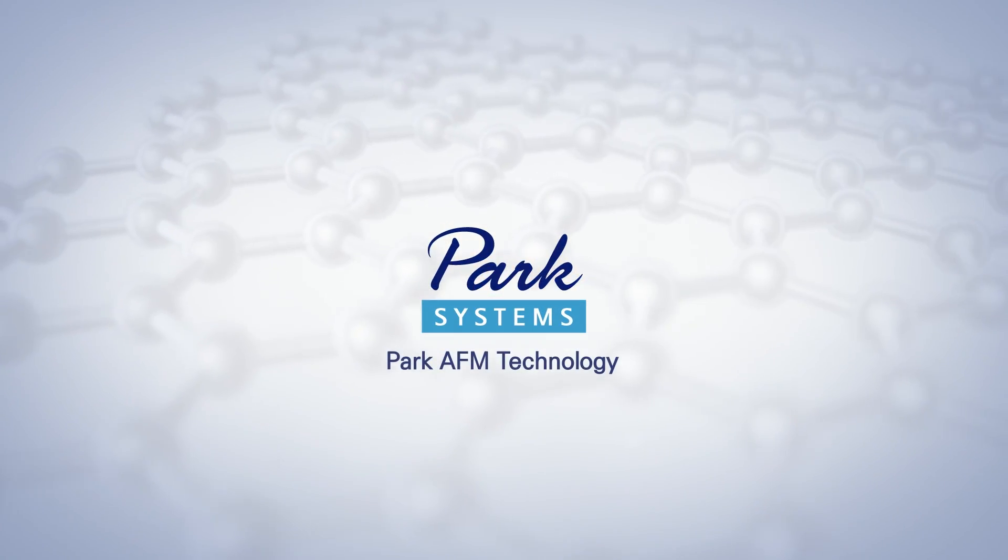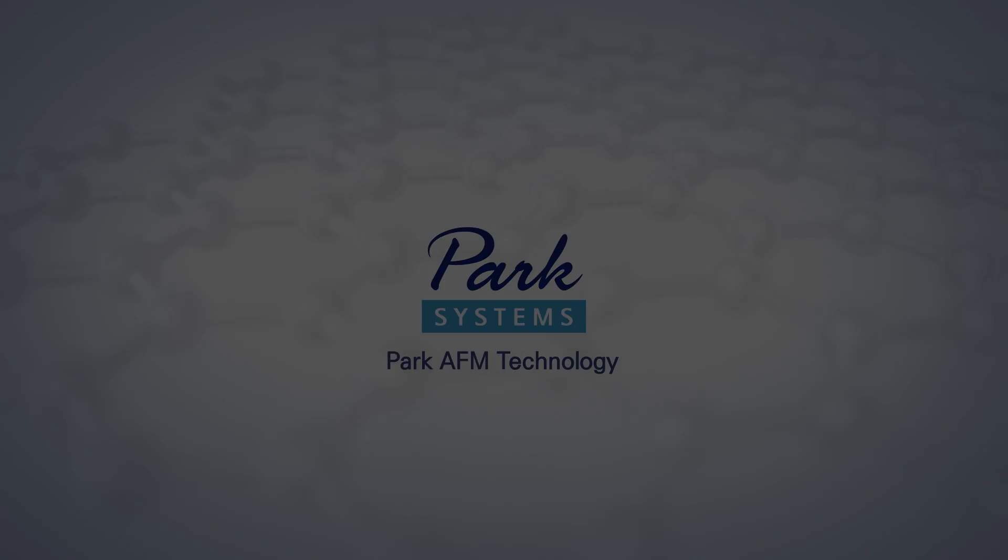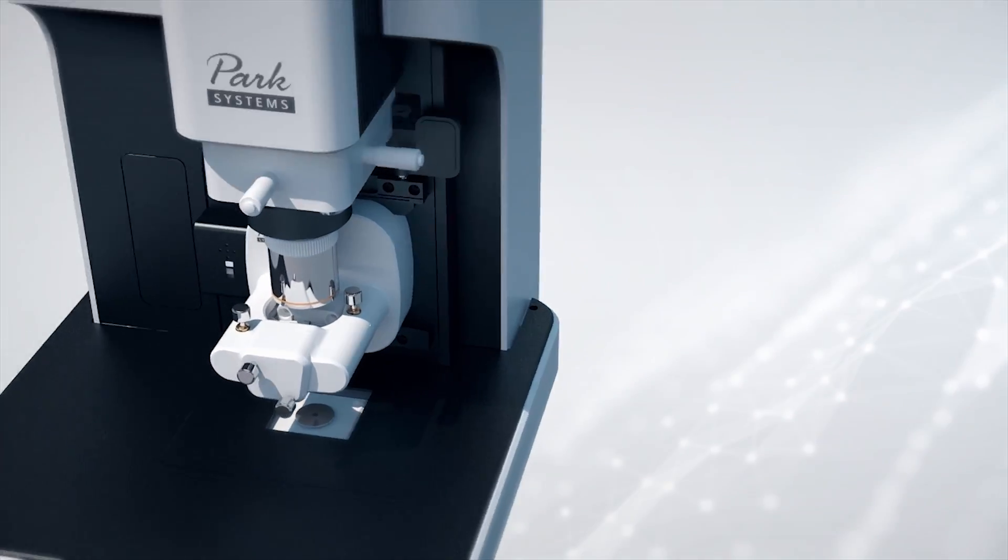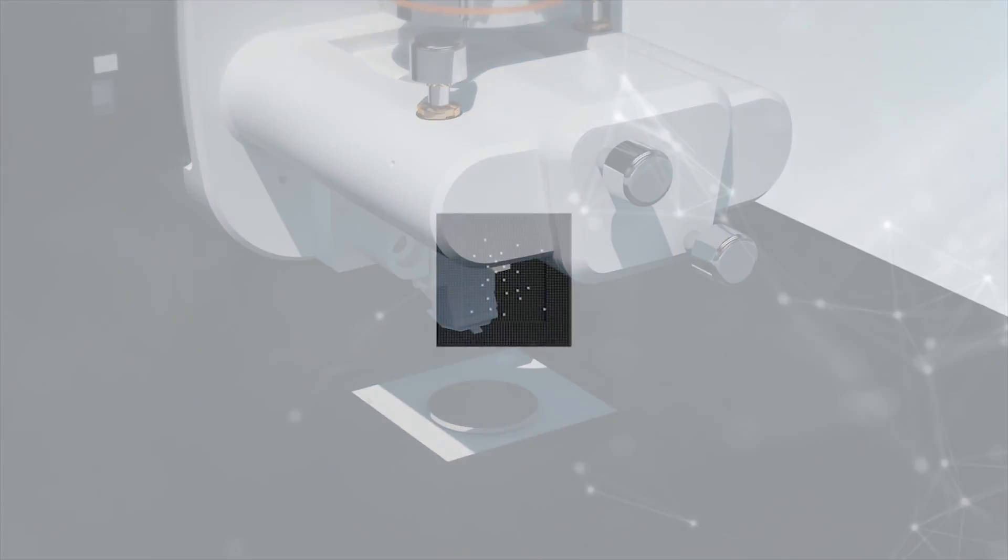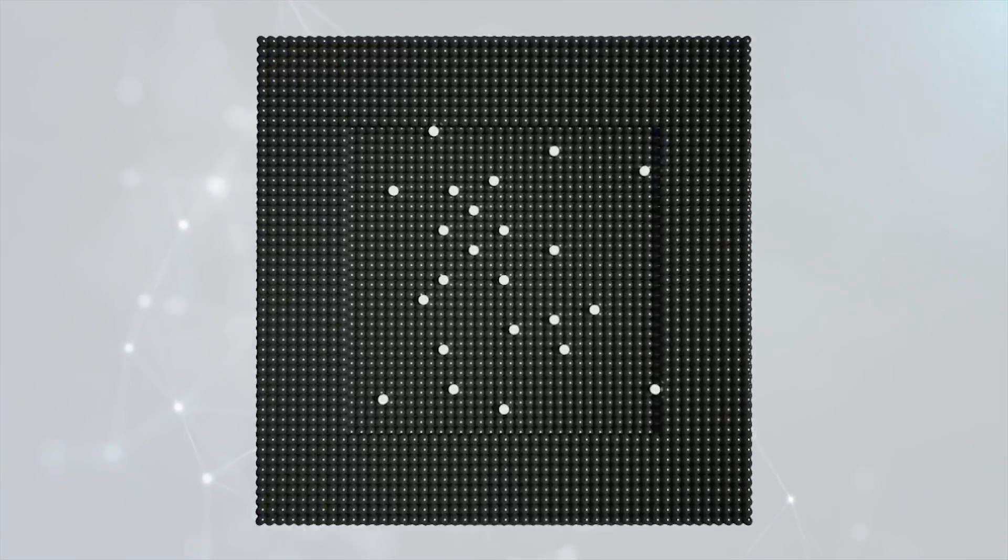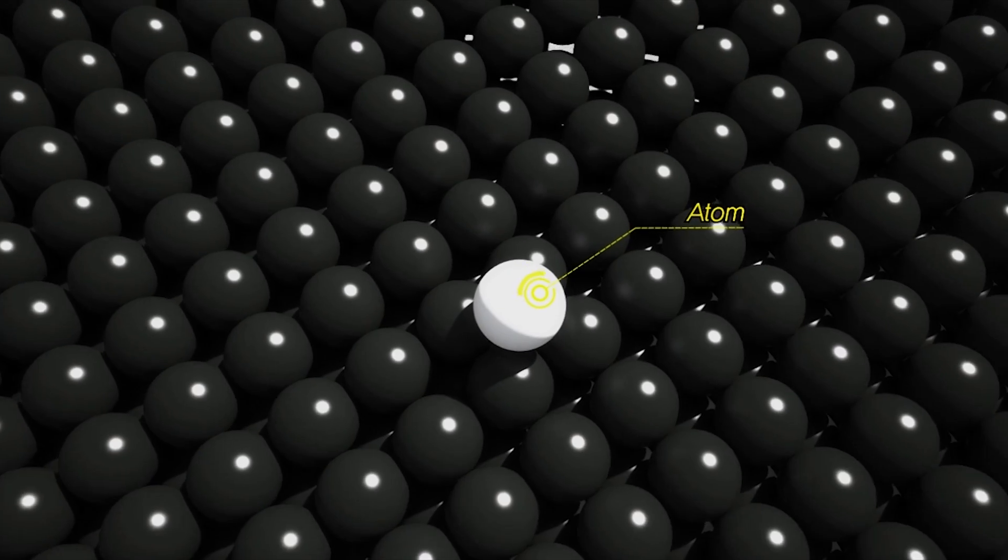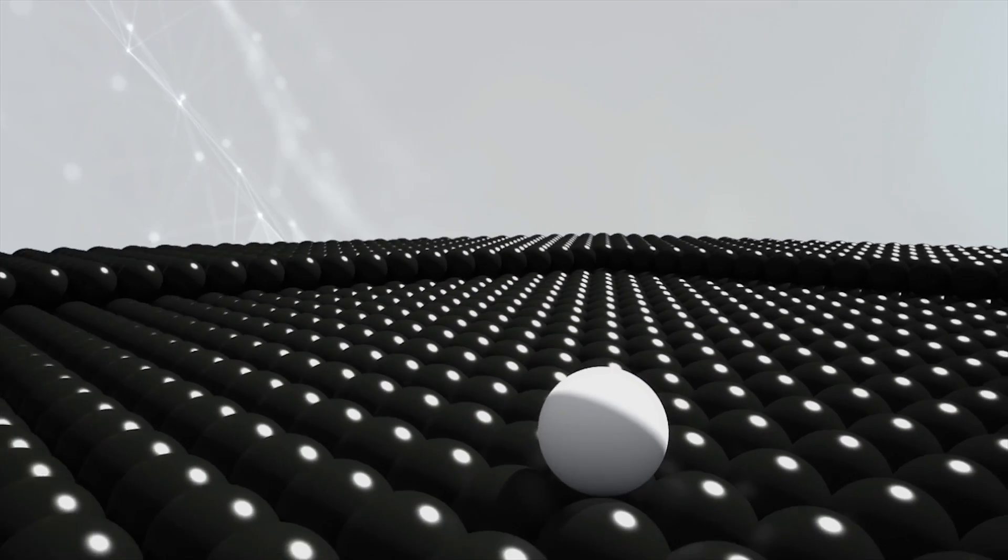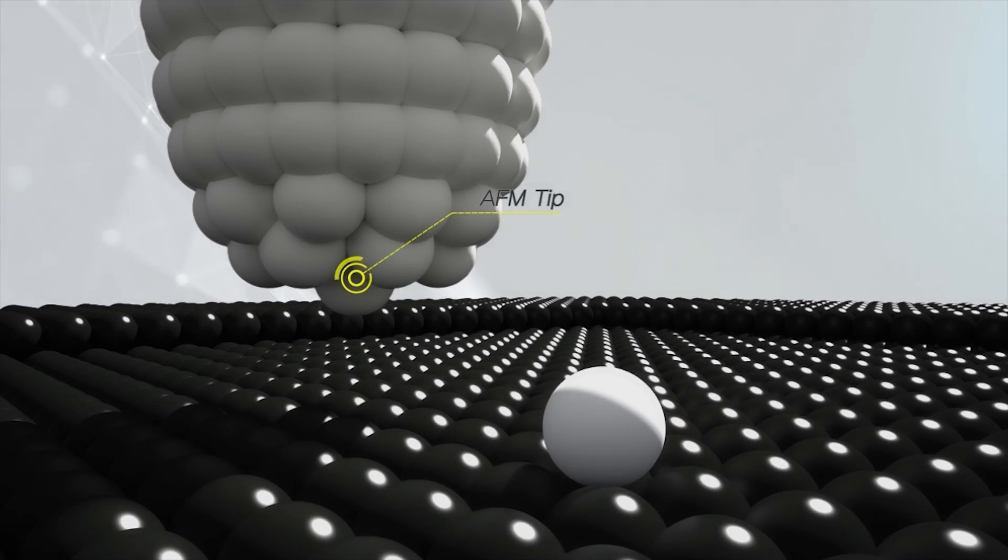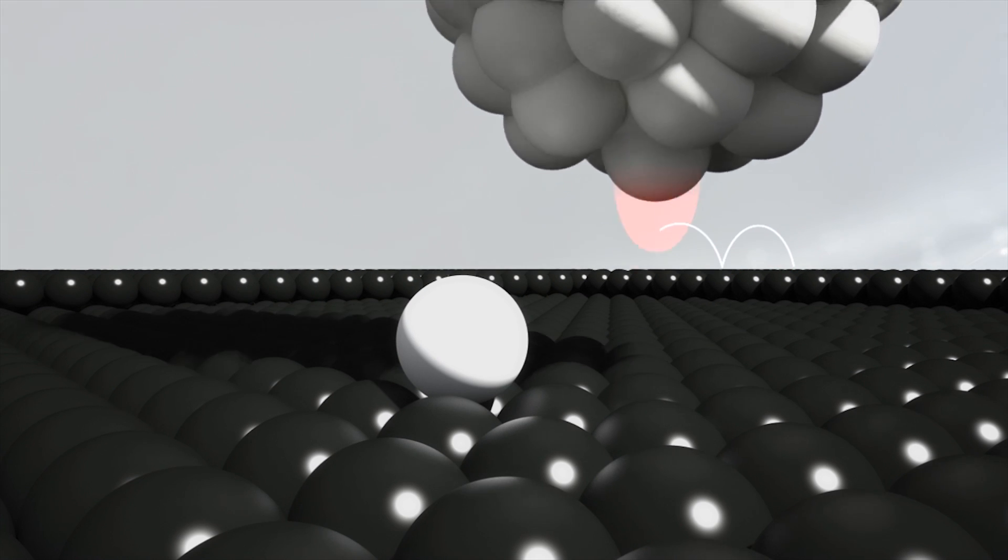Park AFM Technology. An atomic force microscope is a device which measures the form and various physical properties of a sample by bringing the tip of a probe to the sample surface and measuring the interaction forces between the atoms of the tip and those of the sample.